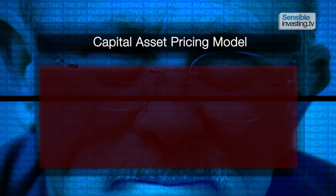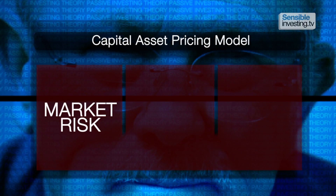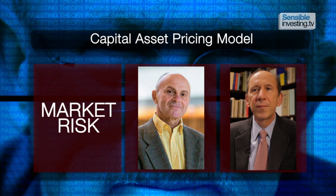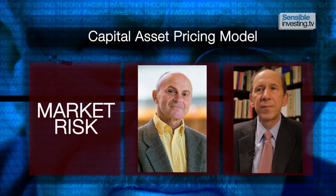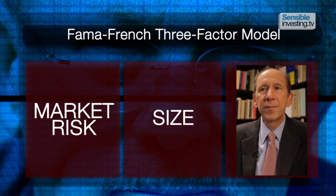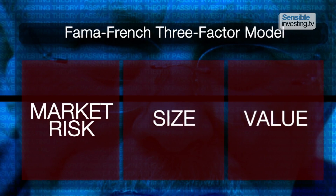The capital asset pricing model was based on just one variable: market risk. It was later expanded on by professors Eugene Fama and Kenneth French at the University of Chicago. The Fama-French three factor model added two more dimensions: size and value. Fama and French showed that once you control for the book-to-market ratio of a company and size, the beta — or the systematic risk from the capital asset pricing model — doesn't really make much of a difference in terms of the returns you can expect. That was quite revolutionary.